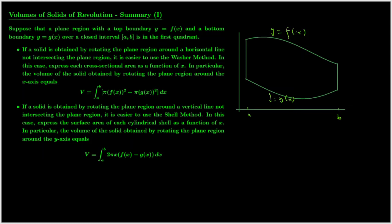We have learned two ways to set up an integral for the volume of a solid of revolution. One way is the washer method, the other way is the shell method — the full name is the method of cylindrical shells. Now I want to summarize in which case it is easier to use which method.